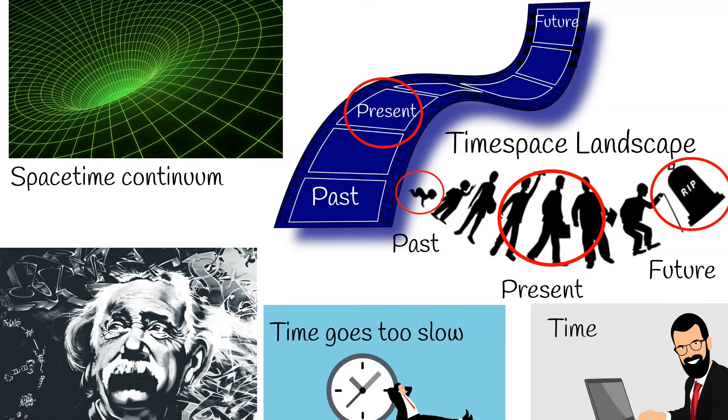For example, if we waiting for something the time goes slowly. If we doing lots of things, time goes fast. But we have our inner circadian rhythm, internal process that regulates the sleep-wake cycle and repeats roughly every 24 hours.